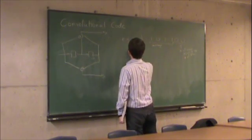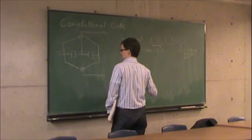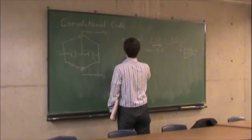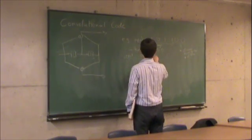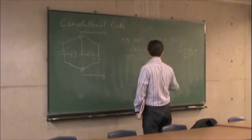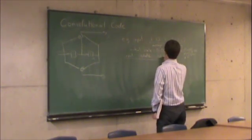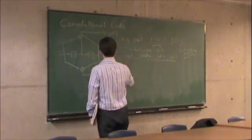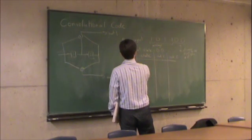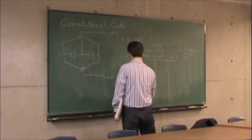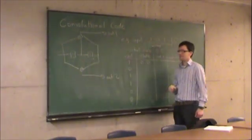The initial state is zero, zero. We always start and end in the zero state. So here's what my encoder is doing — let's write a table with columns for input, state (flip-flop one and flip-flop two), output one, and output two. My input sequence is 1, 0, 1, 1, 0, 0, and my initial state is zero, zero. Reading left to right.